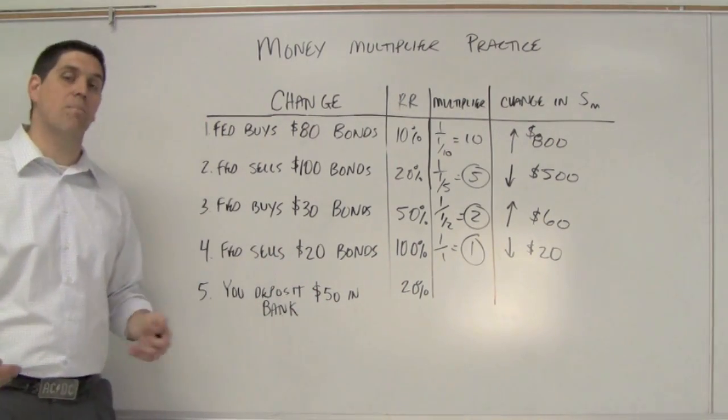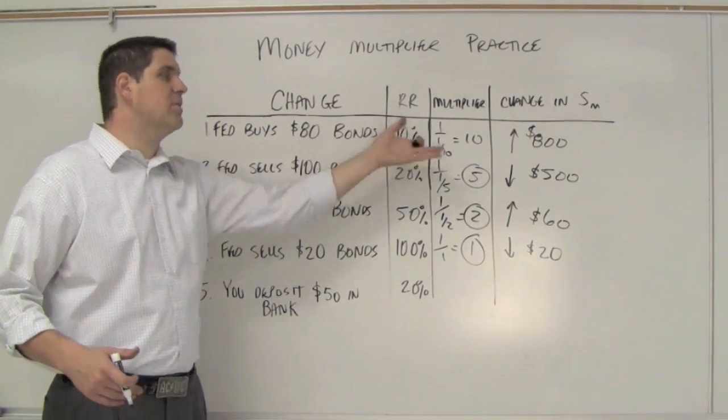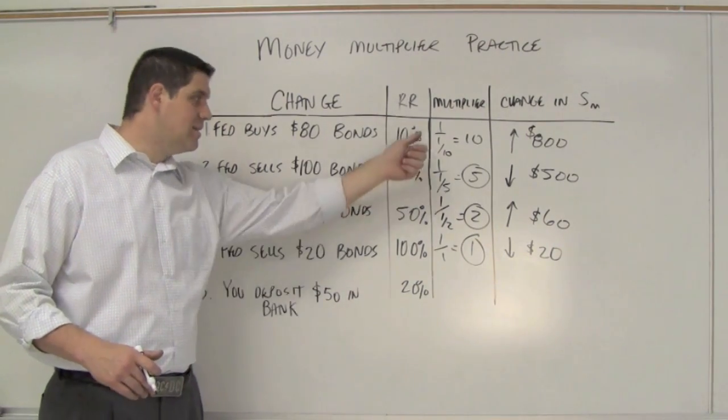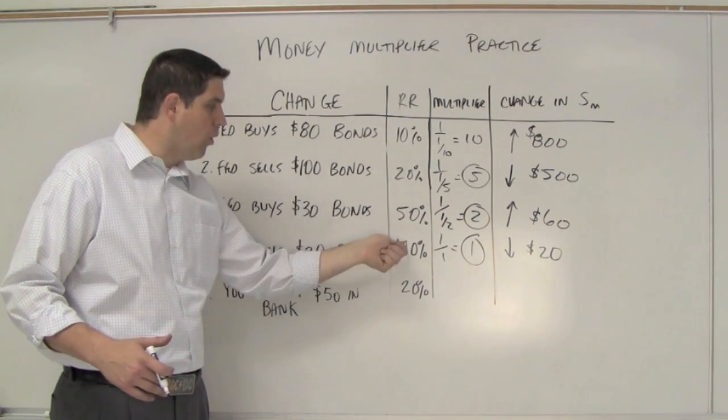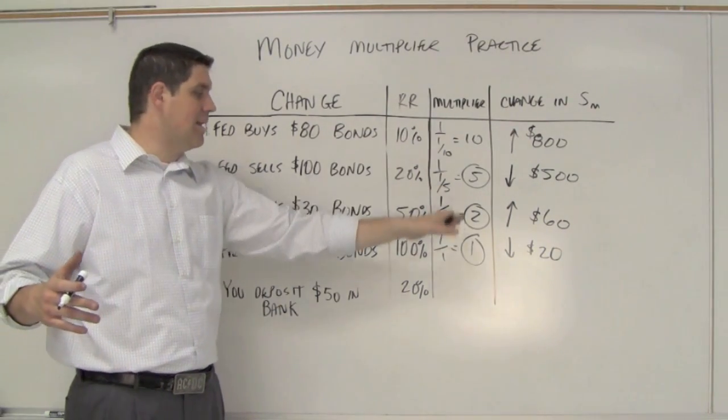Here's what I want to show you. I used these numbers on purpose. When the reserve requirements increase, what happens to the multiplier? It decreases, right? If banks have to hold more and more, then the amount of money that gets multiplied or created by a bank is going to be less and less.